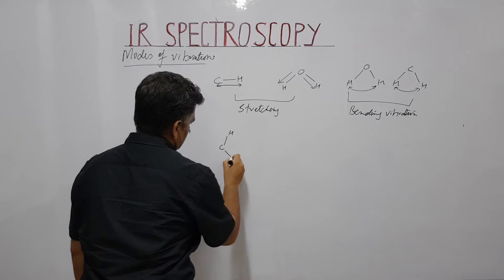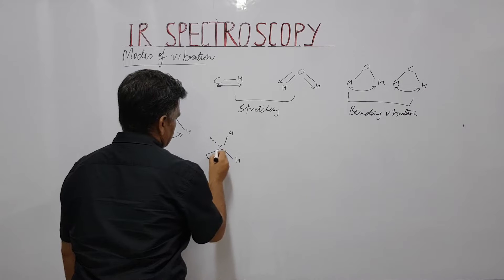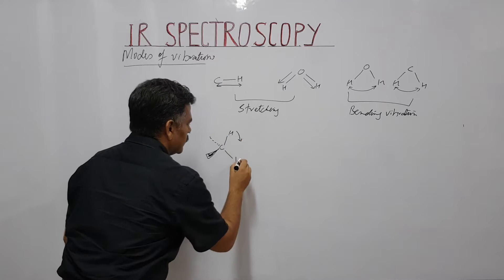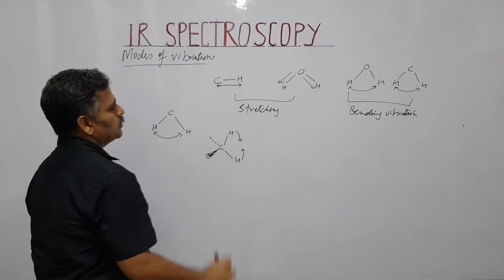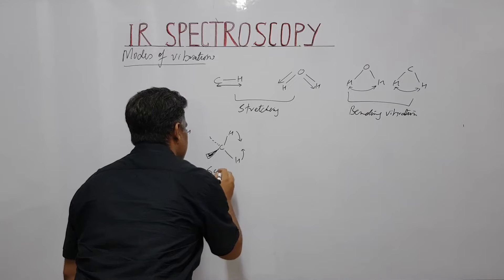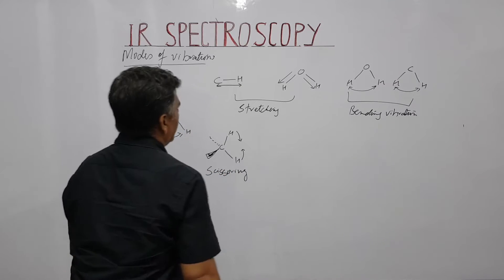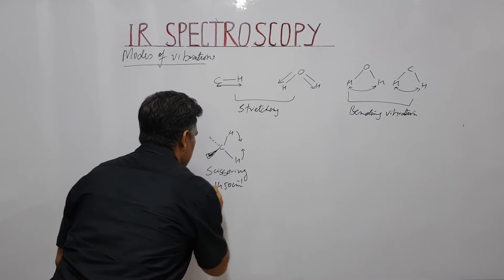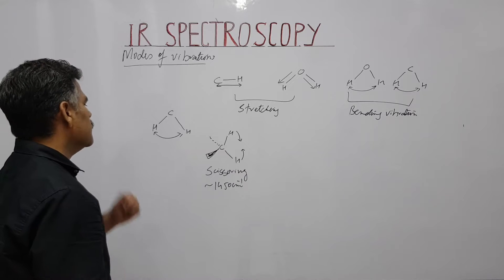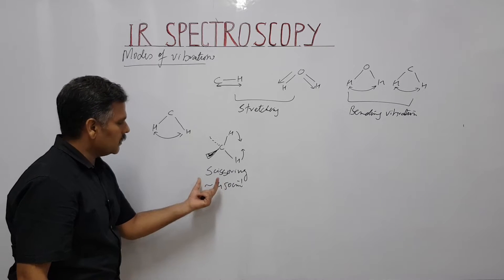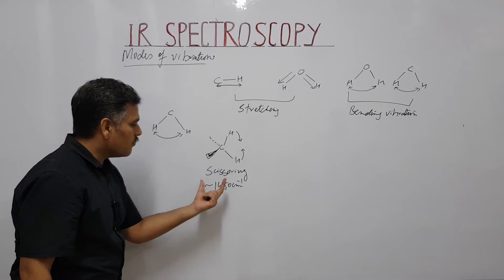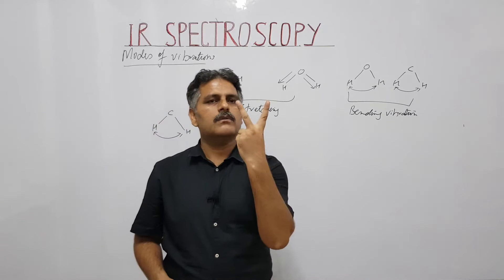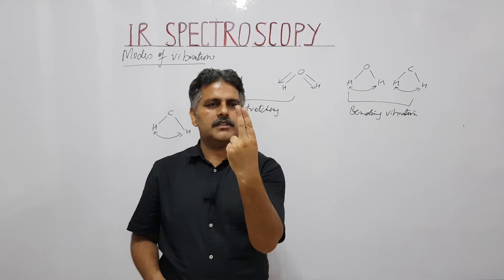Consider a CH2 group — carbon with two hydrogens. When these two hydrogen atoms move symmetrically in-plane, it is known as scissoring. Scissoring or in-plane bending vibration for CH2 appears at around 1465 cm⁻¹. This is an in-plane bending vibration.